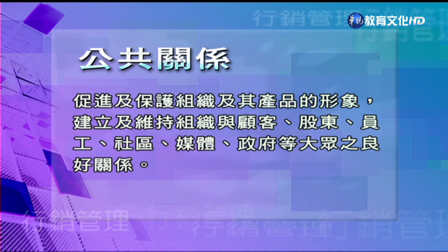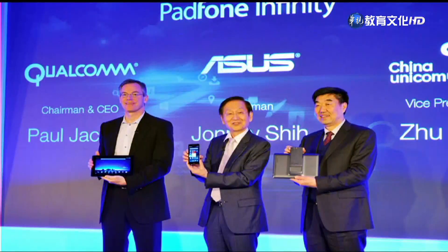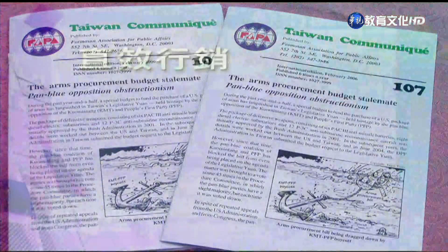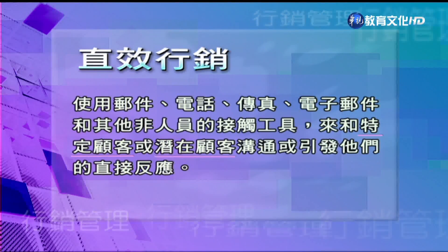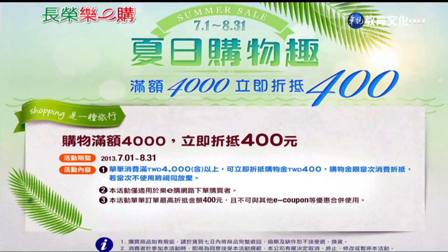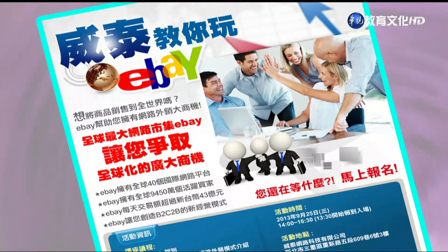这些都是常见的促销活动。第四个是公共关系，促进以及保护组织跟它的产品的形象，要去建立以及维持组织跟顾客、股东、员工、社区、媒体、政府等各种大众的良好的关系，像召开记者会、出版公司的公报。最后就是直销行销，使用邮件、电话、传真、电子邮件或者其他非人员的接触工具来跟特定的顾客或者潜在顾客进行沟通，来引发他们直接的反应，像邮购、电话行销、线上网络行销都是常见的直销行销。